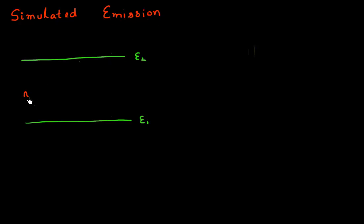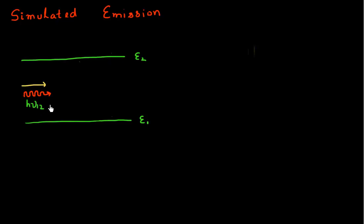I gave you the case where you have a flux of incoming photons. All these photons have the same direction and they also have the same energy H·mu_1,2, which is equivalent to the energy difference between the two energy states E2 and E1. We saw that there could be three things happening — these incoming photons could get absorbed and cause a transition of electrons from a lower energy state to a higher energy state.